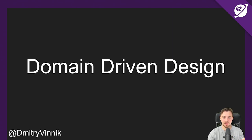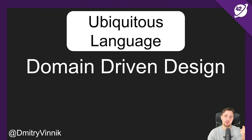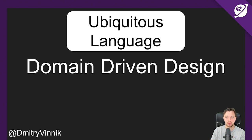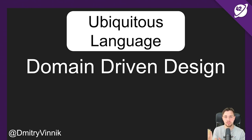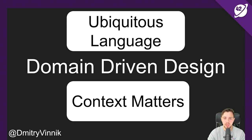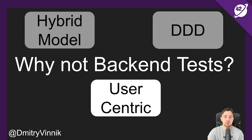Domain-driven design plays a role here too. One of its main ideas is ubiquitous language — speaking the same language with your developers as you would with your end users. When a user talks about an 'account' but the backend calls it 'user.java', there's a misalignment. Nobody cares what design pattern you use at the backend; ultimately it's about what your customer gets. That's why instead of backend testing, we do frontend testing even at the lowest levels, because context matters and we want to keep it user-centric.